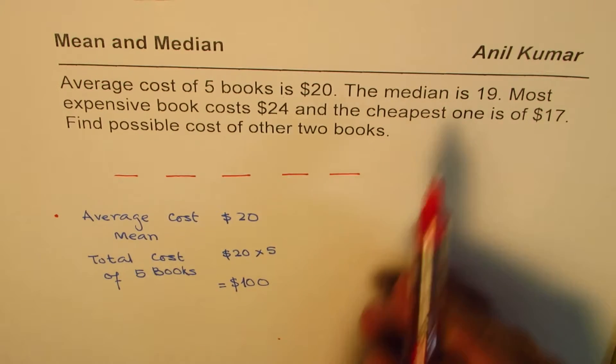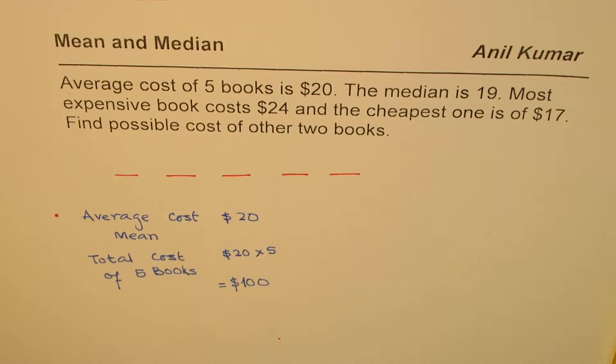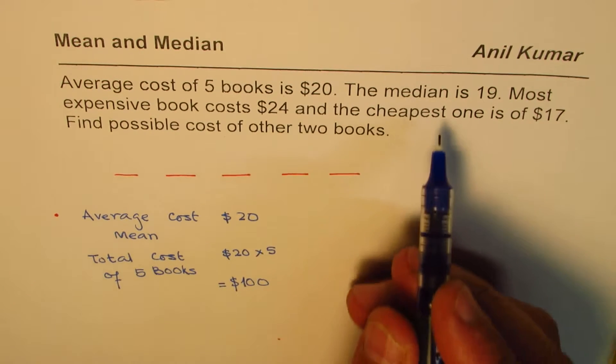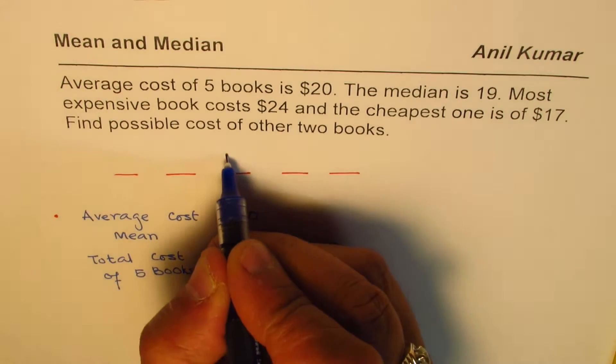What else is given? Median is 19. Now what is median? Median is the central value, right? So median is the central value, which is 19. So this is 19 for us.